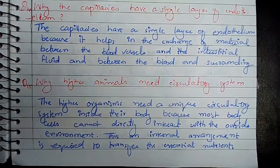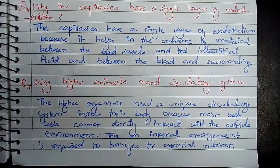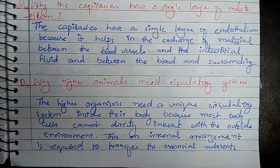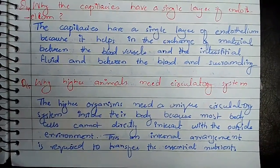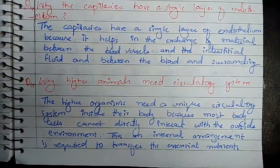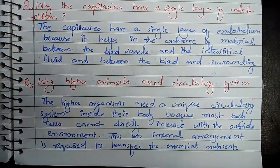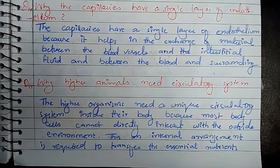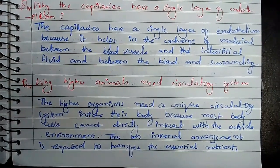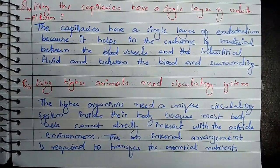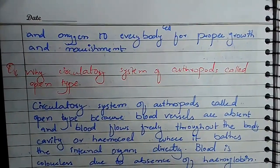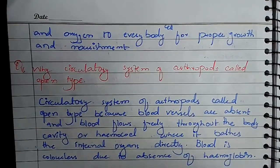Question number 15: why do higher animals need a circulatory system? Higher animals need a circulatory system because their cells do not interact directly with the outside environment. Unlike unicellular animals where all cells are in direct contact with the environment, multicellular animals do not contact the environment and therefore need an internal arrangement to transfer essential nutrients for proper growth and nourishment.